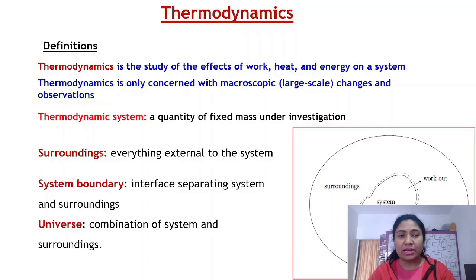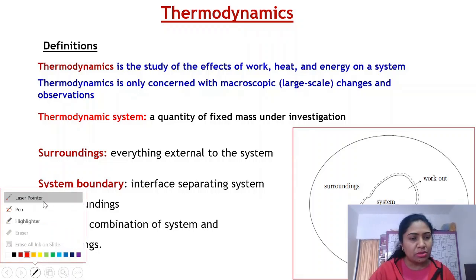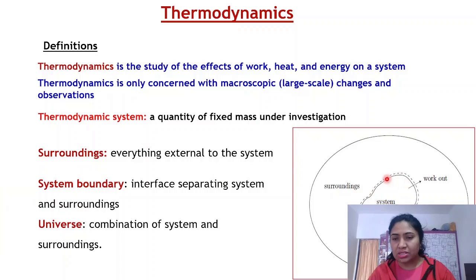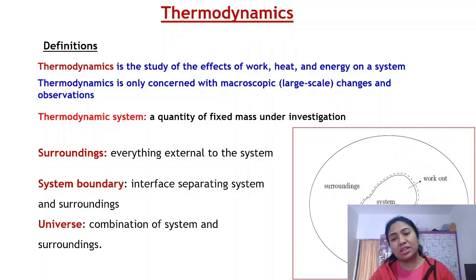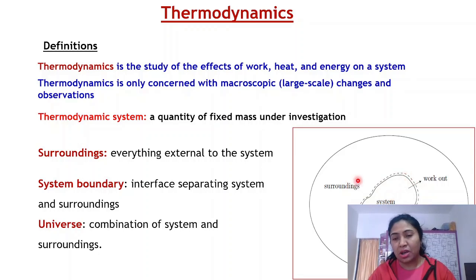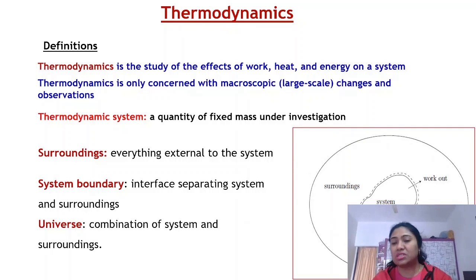Before going to the actual content, let us see some of the terminologies. A system is a matter or a mass which is under study. Whatever is outside the system is called its surrounding. The system and surrounding are separated by a boundary called the system boundary. The system, surrounding, and boundary together comprise the universe — that is, all the system which is under study.